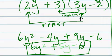Combine like terms. In this case, 6y to the second minus 4 plus 9 gives us 5y minus 6. That is a simplified foil. And you will use it a lot as you get into polynomials. Thanks for watching.